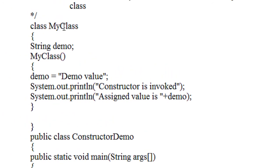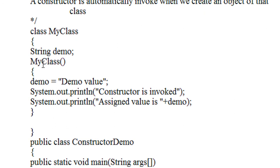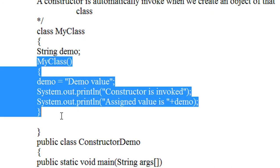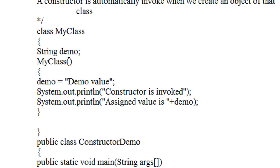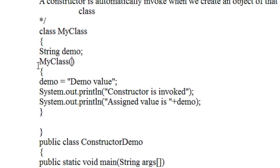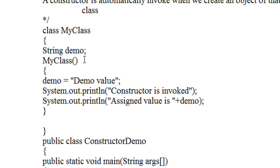Here is the class MyClass. Here a constructor is present. You can see there is no argument passed in this class, because this is a default constructor — this is an example for a default constructor, because there are no arguments present for this constructor.